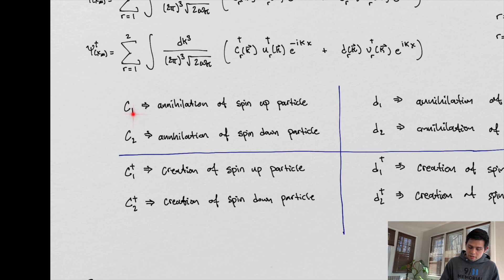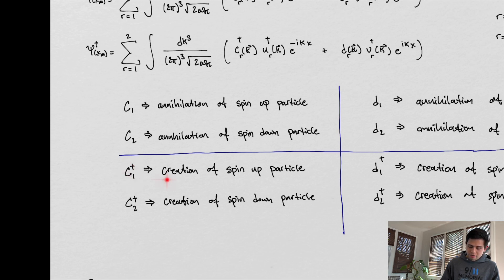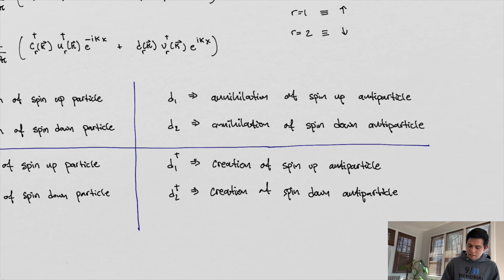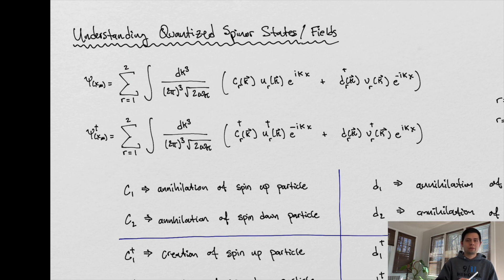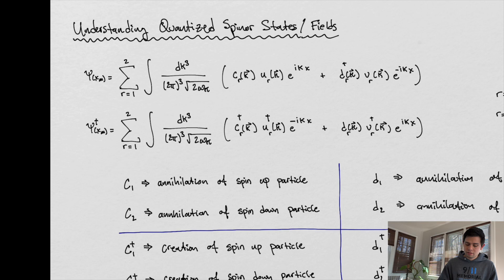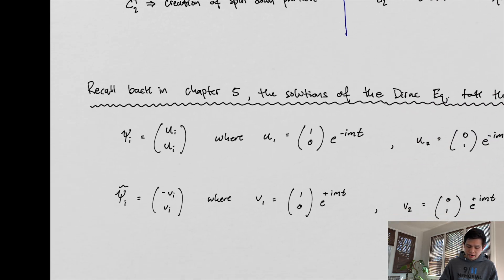We have spin up and spin down. Without the daggers, the operators are associated with annihilation; with the daggers, they're associated with creation. So c one dagger means creation of a spin-up particle — the dagger tells us creation, the one tells us spin up. The same goes for the d operators, but those refer to antiparticles. The labels one and two for spin up and spin down are really just labels — mathematically we're summing over both spin states.